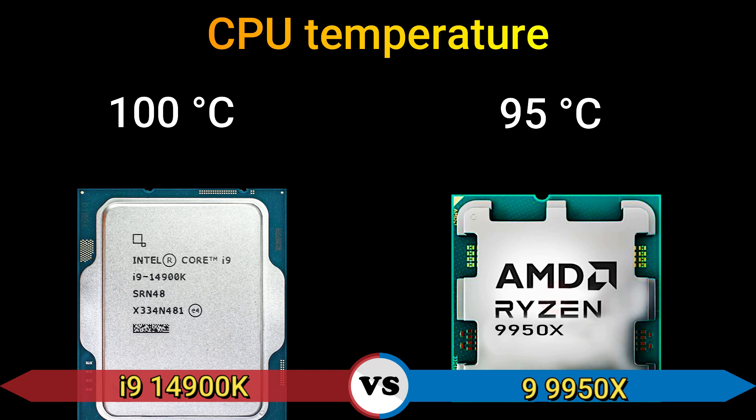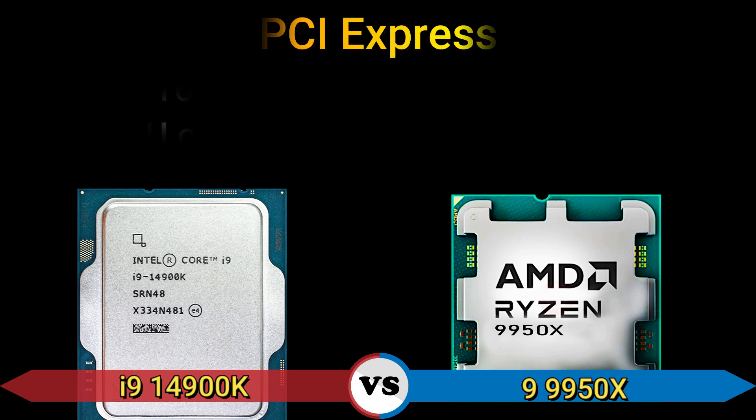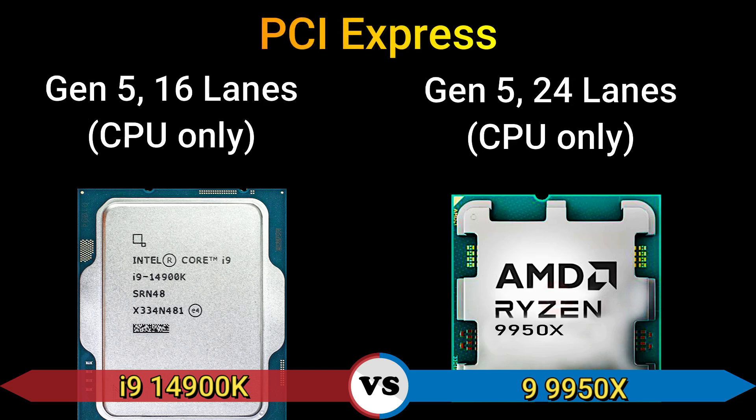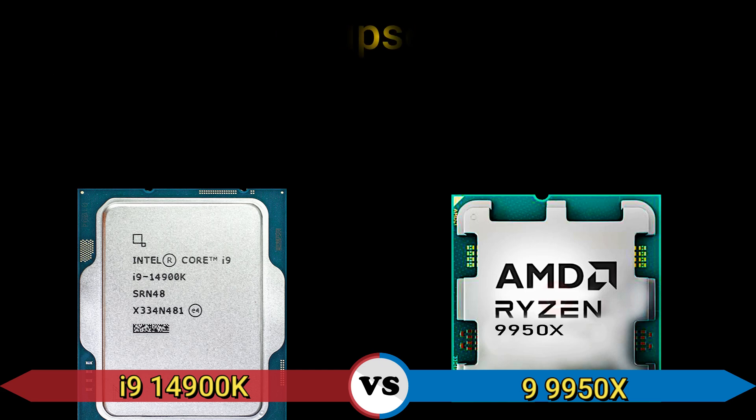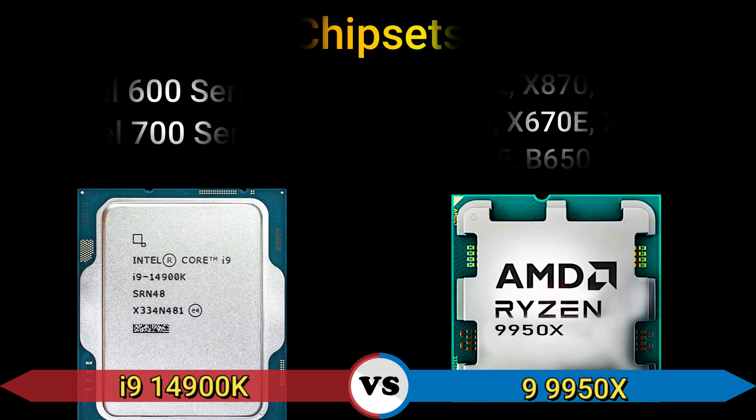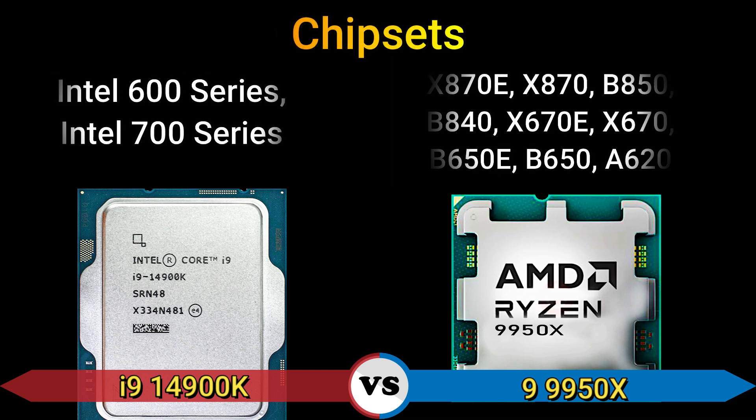PCI Express: Zen 5, 16 lanes CPU only, and Zen 5, 24 full lanes CPU only. Chipset.